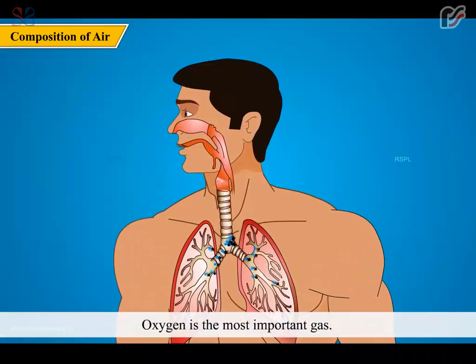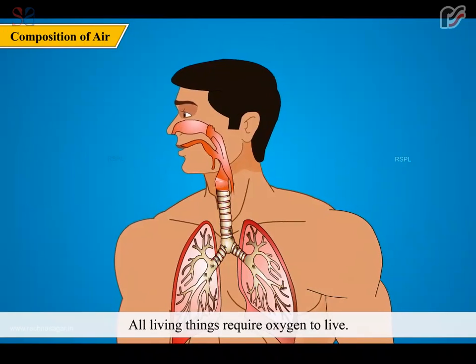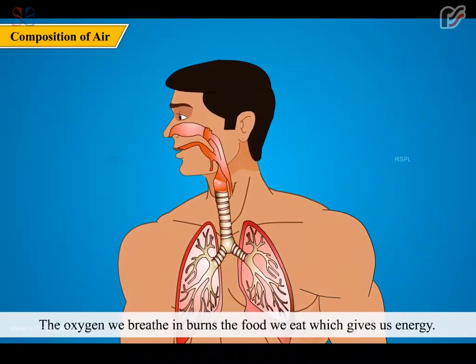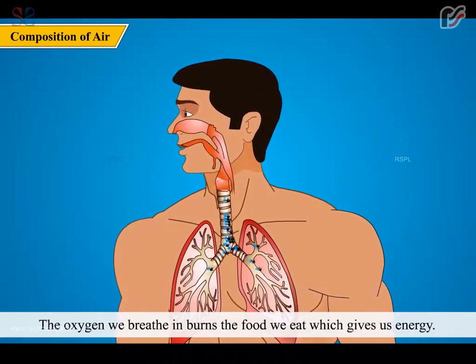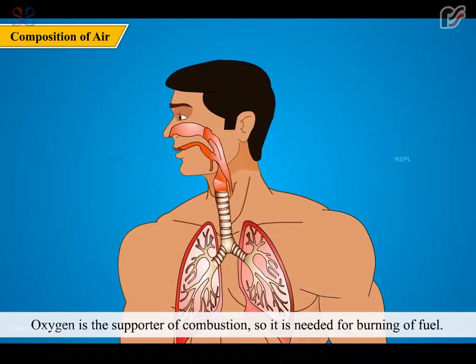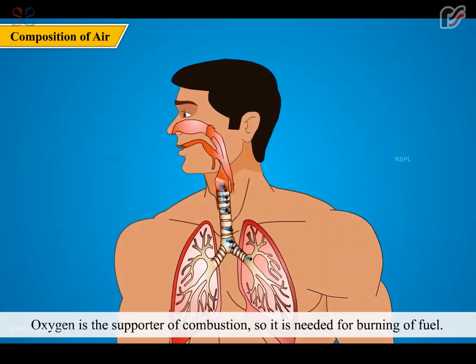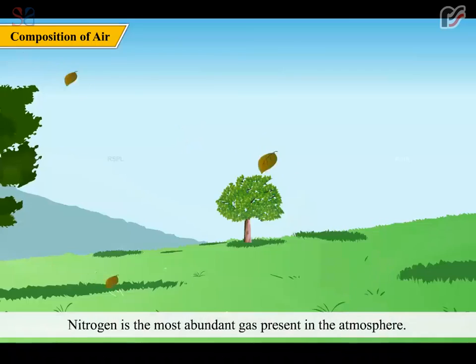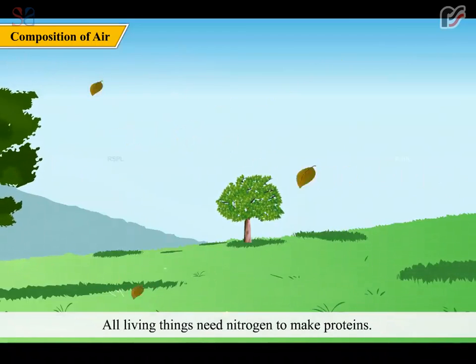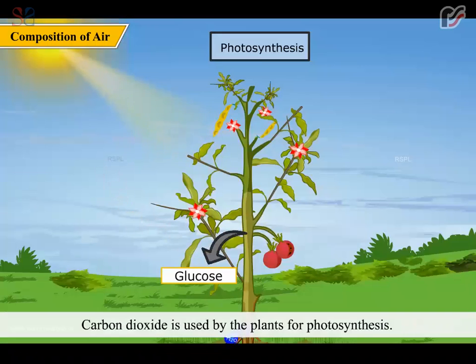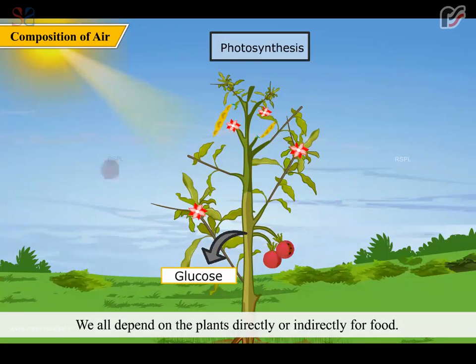Oxygen is the most important gas. All living things require oxygen to live. The oxygen we breathe in burns the food we eat which gives us energy. Oxygen is a supporter of combustion, so it is needed for burning of fuel. Nitrogen is the most abundant gas present in the atmosphere. All living things need nitrogen to make proteins. Carbon dioxide is used by the plants for photosynthesis. We all depend on the plants directly or indirectly for food.